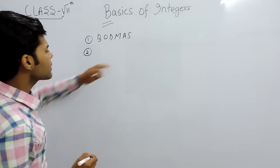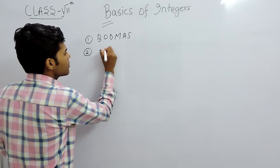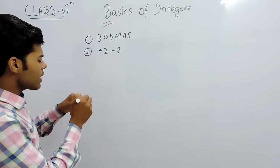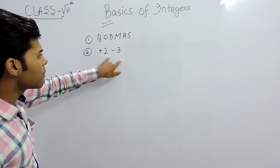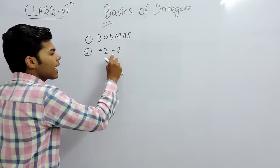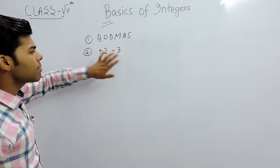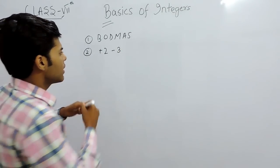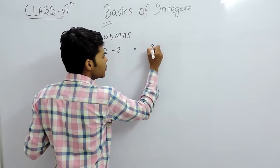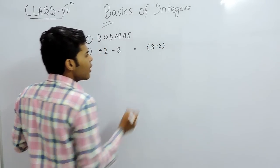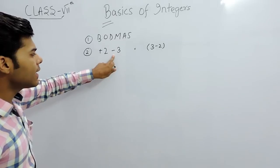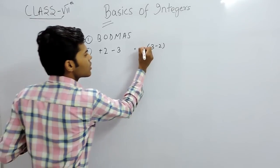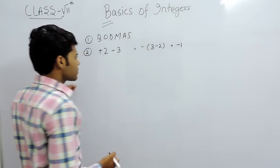There might come some problems where there are signs like plus 2 and minus 3. In these cases, we subtract the numbers — if one sign is positive and another is negative, we do 3 minus 2, then put the sign of the greatest number. The greatest number is 3 and its sign is minus, so the answer is minus 1.